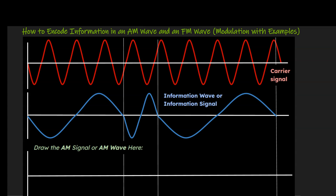Hey, welcome back. Today we're going to be talking about how to encode information in an AM wave and an FM wave. Maybe you don't know what those things are or how this works — that's exactly what I'm going to be showing you today, using examples. This is appropriate for a physics, AP physics, or physical science class, or for general interest if you've ever wondered how information is encoded in waves and broadcast through radio towers.